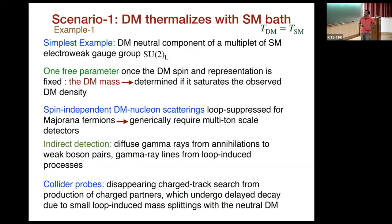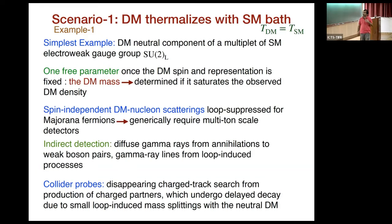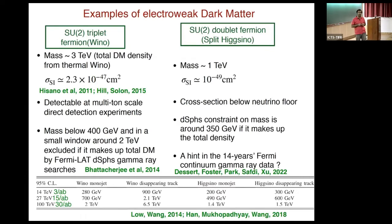If these particles are Majorana fermions, then spin-independent scatterings with nucleons are loop-suppressed, requiring multi-ton scale detectors. Indirect detection becomes an important probe — the most important channels are diffuse gamma rays from annihilations to weak bosons, and gamma-ray lines from loop-induced processes with lower rates. There is also an interesting collider probe: a disappearing charged track signal from the production of charged partners, which undergo delayed decay due to the small loop-suppressed mass splitting with the neutral component. The wino mass is around 3 TeV if it saturates the density; the higgsino is around 1 TeV. The loop-induced scattering rate for the wino is around 10⁻⁴⁷ cm², which requires a multi-ton scale experiment but is feasible in the near future.